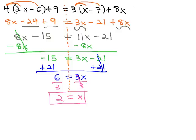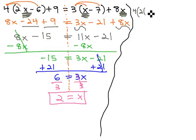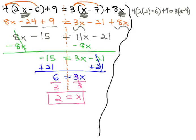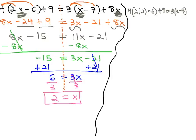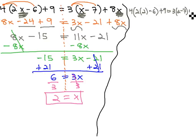As usual, we will like to check this answer to make sure it works. Let's plug it in, plugging 2 in to the original equation for each of the x's. Notice x appears in three places. We have 4 times 2x, which we just found out was 2, minus 6, plus 9, and we want it to balance with 3 times x, which we found out to be 2, minus 7, plus 8x, which is 2.